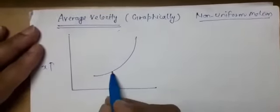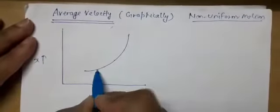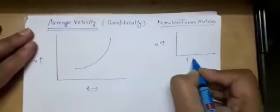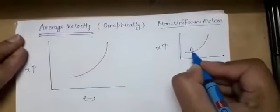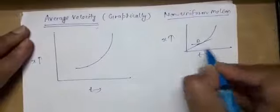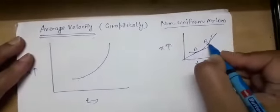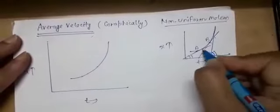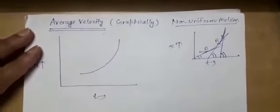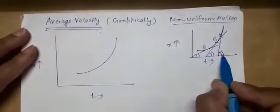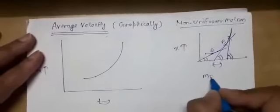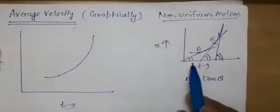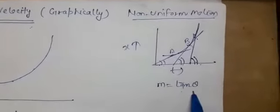Velocity at different instants of time will be different. Suppose we take point A — if we draw a tangent here, we get a certain slope. Taking another point B, the tangent makes a different angle. As we take different points on the curve, as time increases, the angle of the tangent goes on increasing. Since the slope at any point is given by tan θ, if the angle is increasing, tan θ will also increase and hence the slope increases.